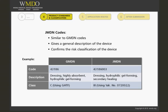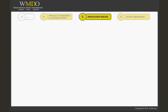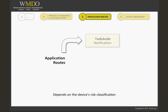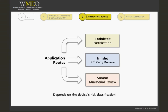Do you see the theme here? It is imperative that the Japanese MAH is involved as much as possible. Basically, depending on your device's risk classification, there are several routes you can take: the TODOKEDE route, or notification; the NINSHO route, or third-party review; or the SHONIN, which is the ministerial review by the PMDA.